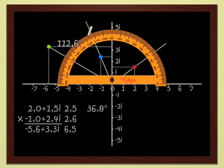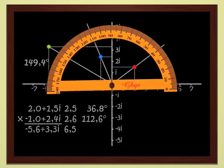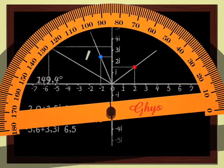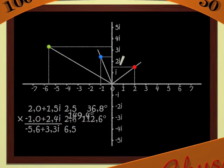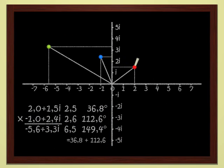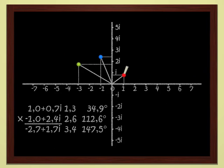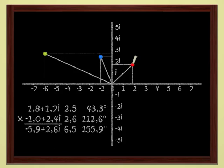The argument of the blue point is 112.6 degrees, and for the product, the green point, we get 149.4 degrees. That is, the sum of the arguments of the two numbers. When we multiply two complex numbers, moduli are multiplied and arguments are added.